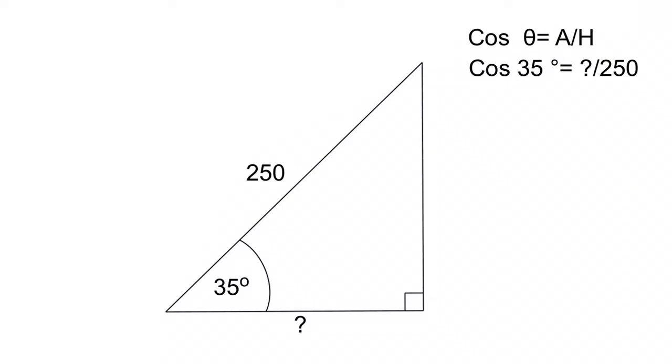Let's start out with plugging the numbers that we know. So we know that the cos of 35 degrees is equal to the unknown over 250.